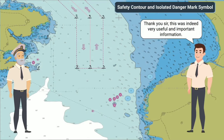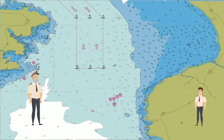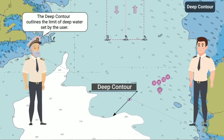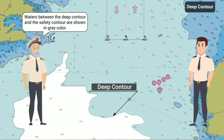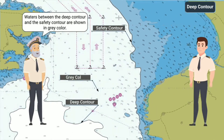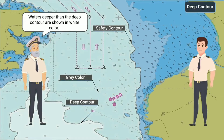Thank you, sir. This was indeed very useful and important information. The deep contour outlines the limit of deep water set by the user. Waters between the deep contour and the safety contour are shown in grey color. Waters deeper than the deep contour are shown in white color.